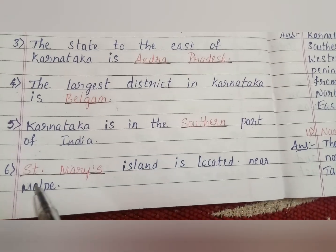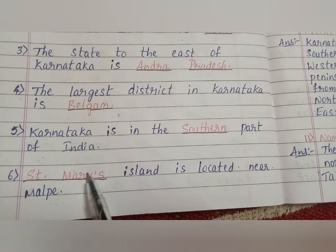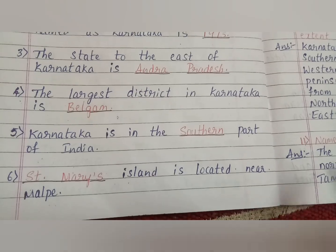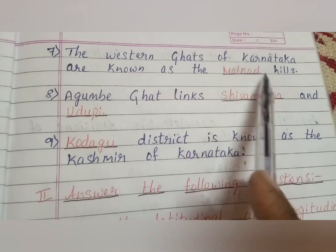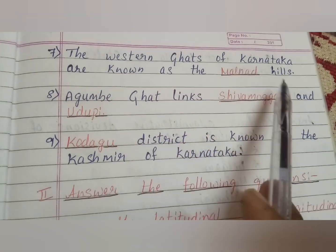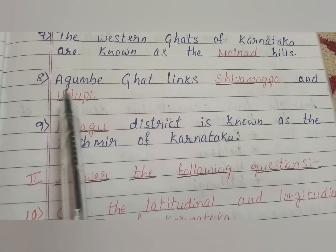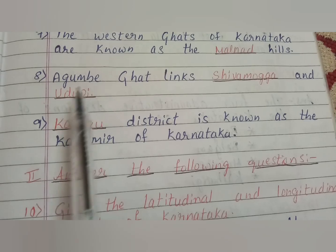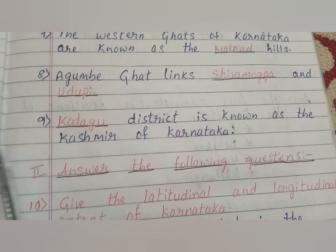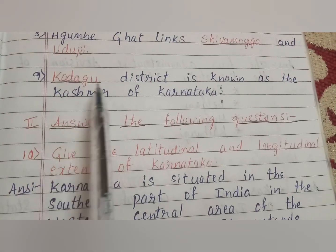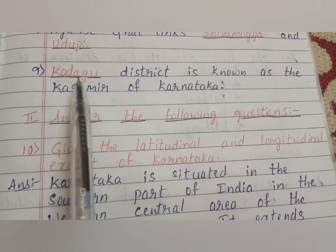Next one: Karnataka is in the — part of India — answer is southern part of India. Sixth one: — island is located near Malpe — it is Saint Mary's Island. Next one: the Western Ghats of Karnataka are known as the — hills — it is Malanad Hills. Eighth one: Agumbe Ghat links — and — Agumbe Ghat links Shivamogga and Udupi. Next one: — district is known as the Kashmir of Karnataka — answer is Kodagu.